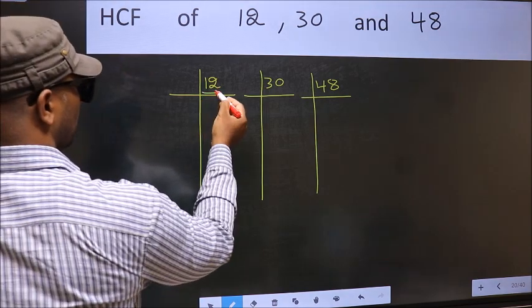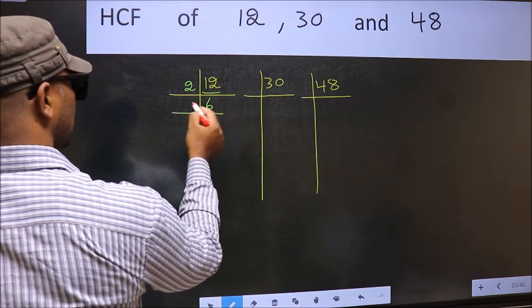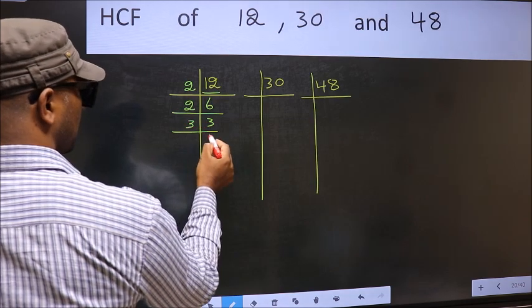Here we have 12. 12 is 2, 6, 12. Now 6 is 2, 3, 6. Now 3, 3 is a prime number so 3, 1, 3.